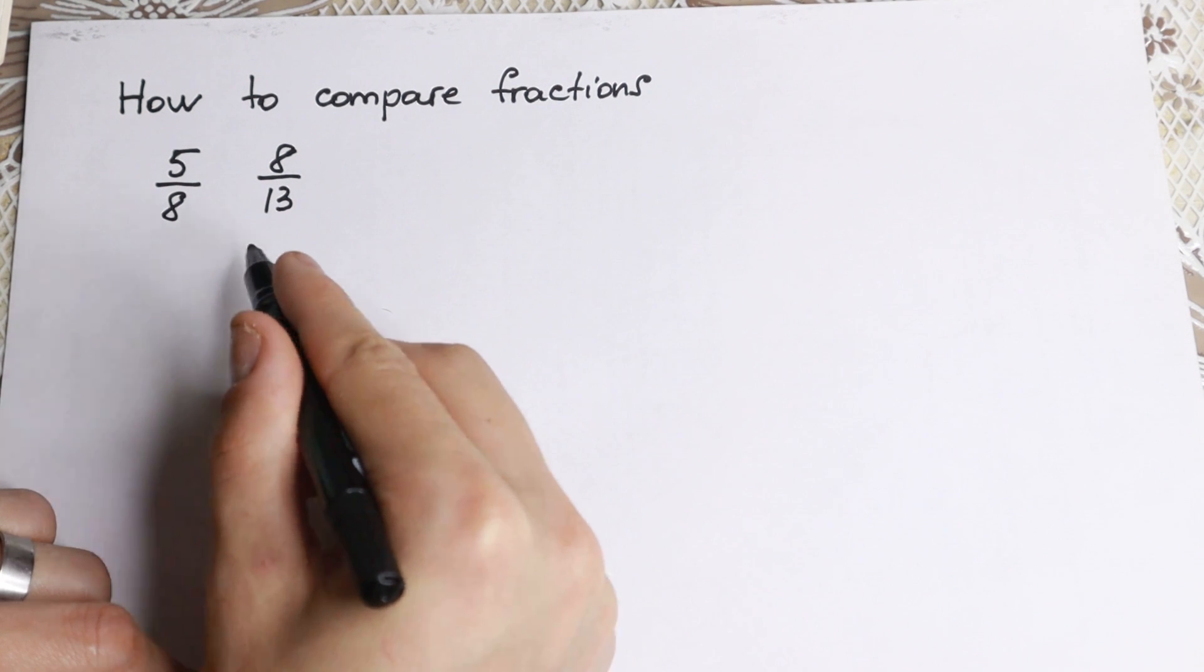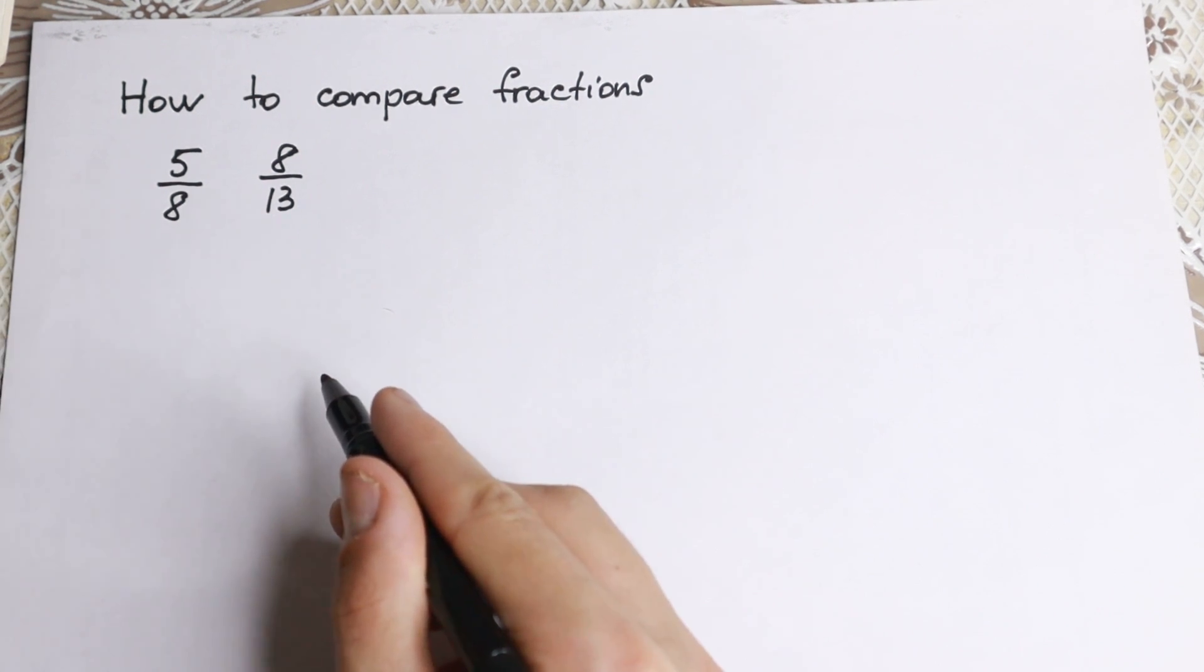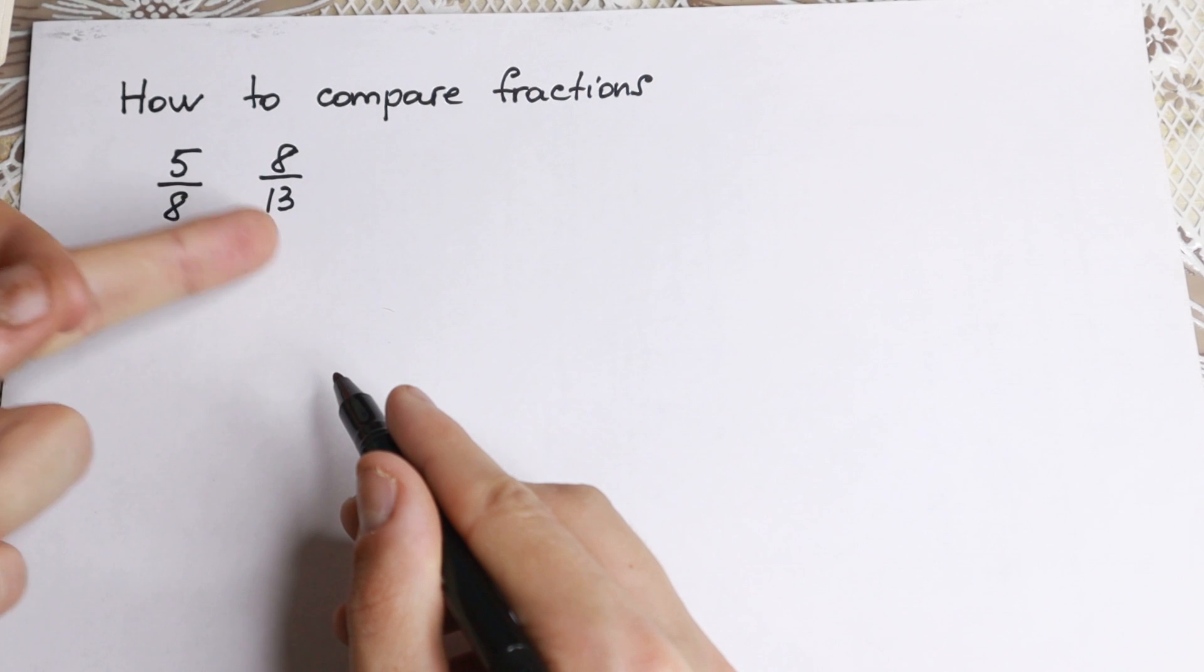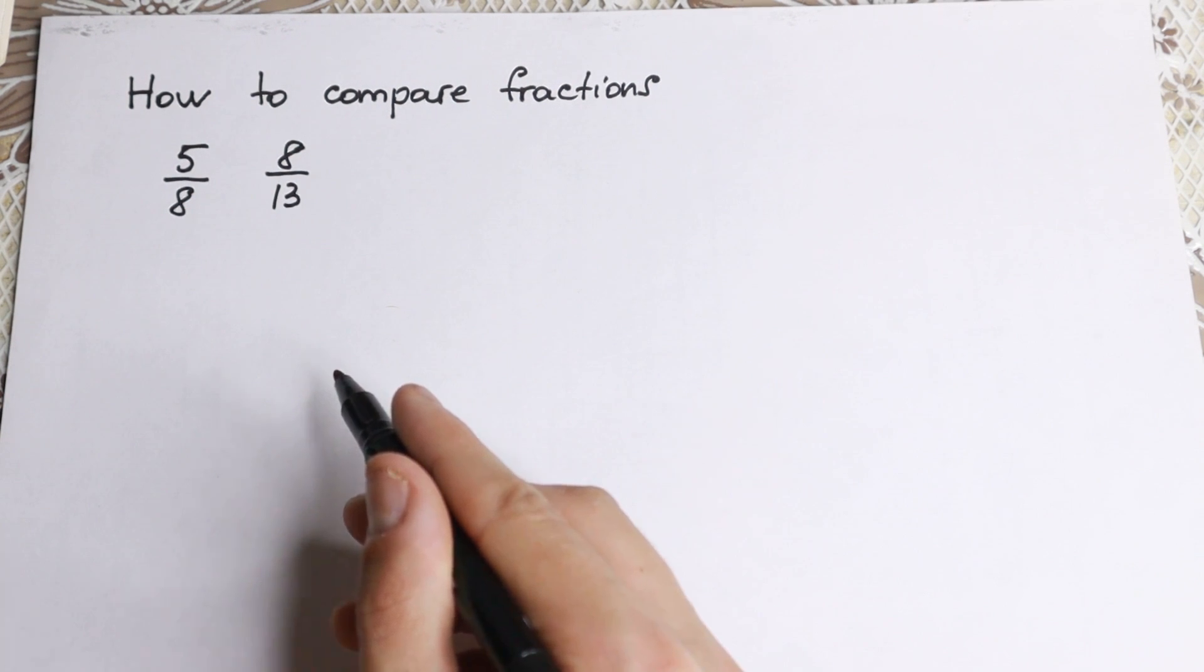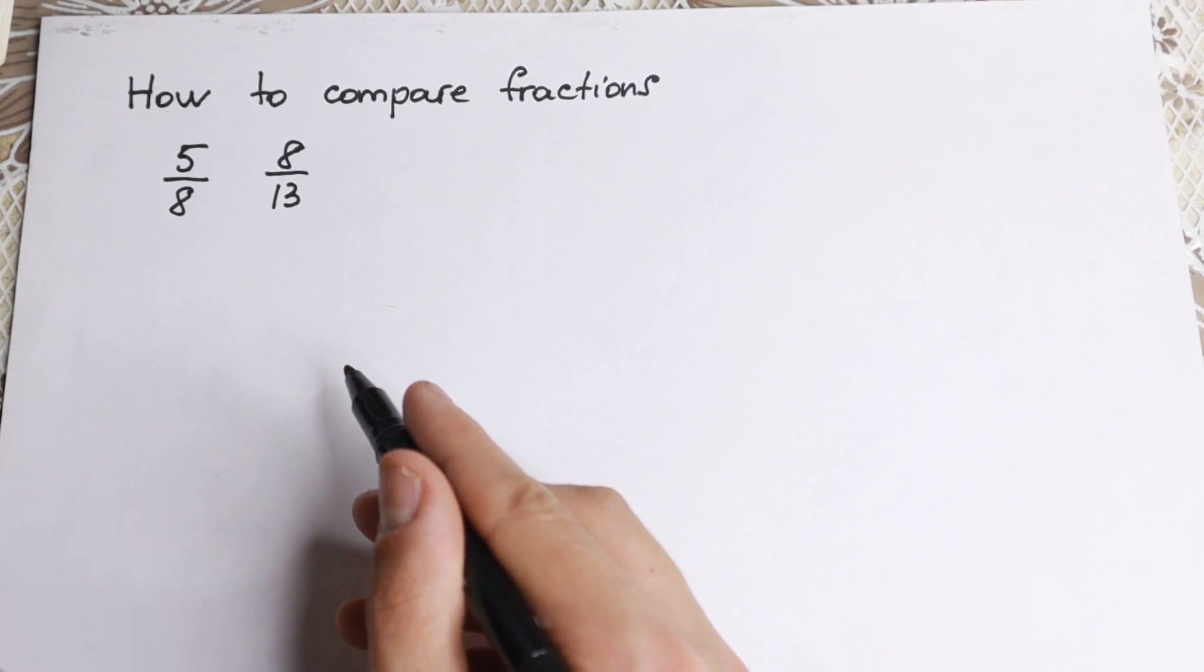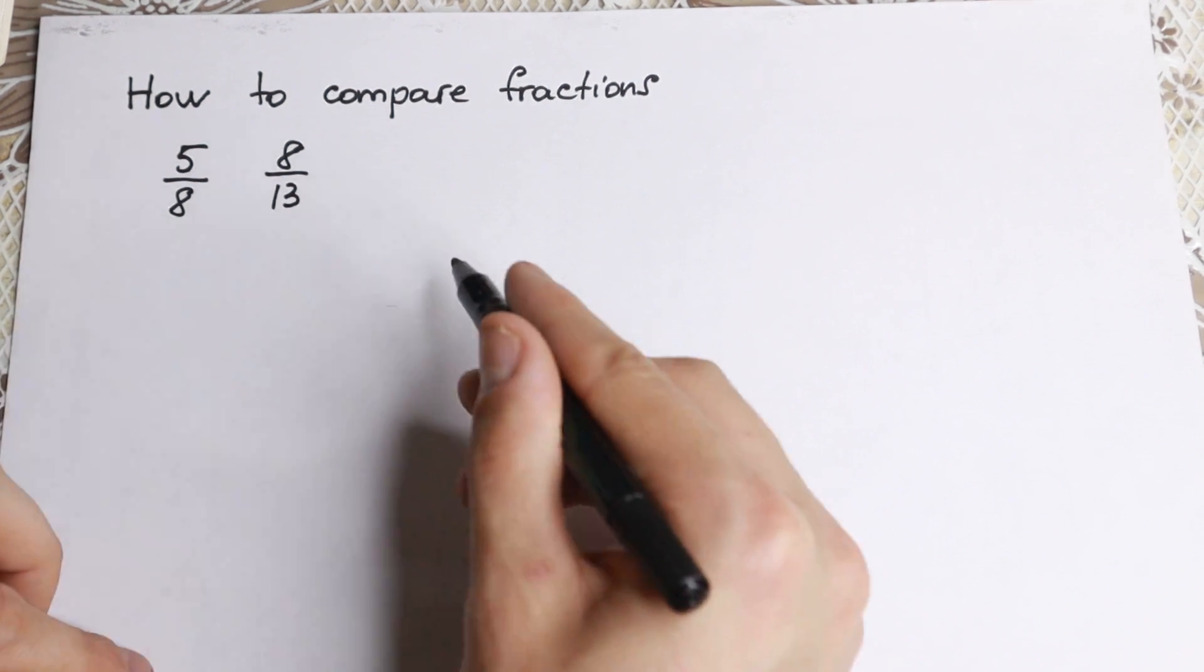Take a look closely. We have two fractions: 5 over 8 and 8 over 13. We don't know exactly the value of these two values because this is not like one-half or one-third that we know approximately. We have 5/8 and 8/13.